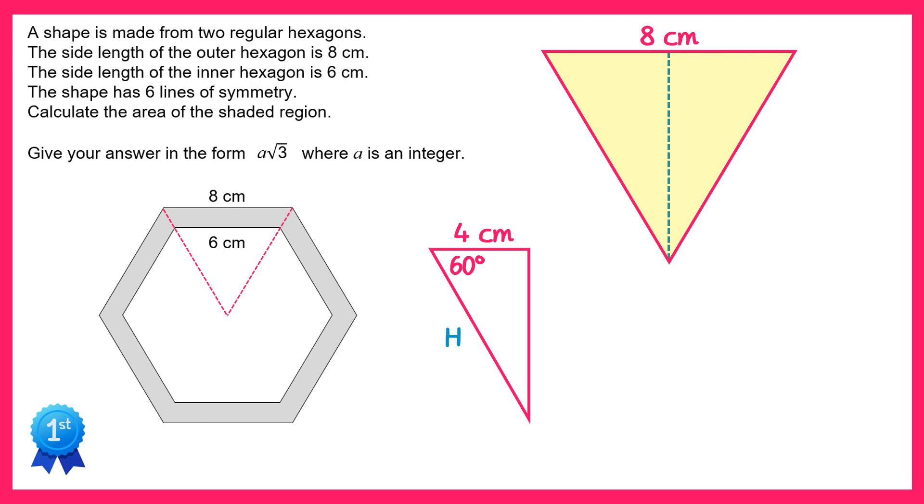We can label the triangle in the same way as before and again use tan, so tan of 60 equals the opposite divided by the adjacent which is four. So the opposite equals four times tan 60, which is four root three. So the height of this triangle is four root three.